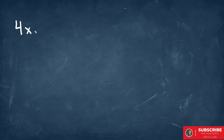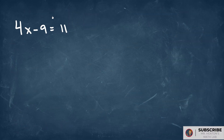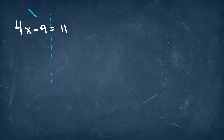For this example, we're going to have 4x minus 9 is equal to 11. When we have something like this, what we want to do is we want to try to get a variable — in this case it's x — on one side, and all of our numbers on the other side. To be able to do this, we have to take the opposite of the signs that we see.